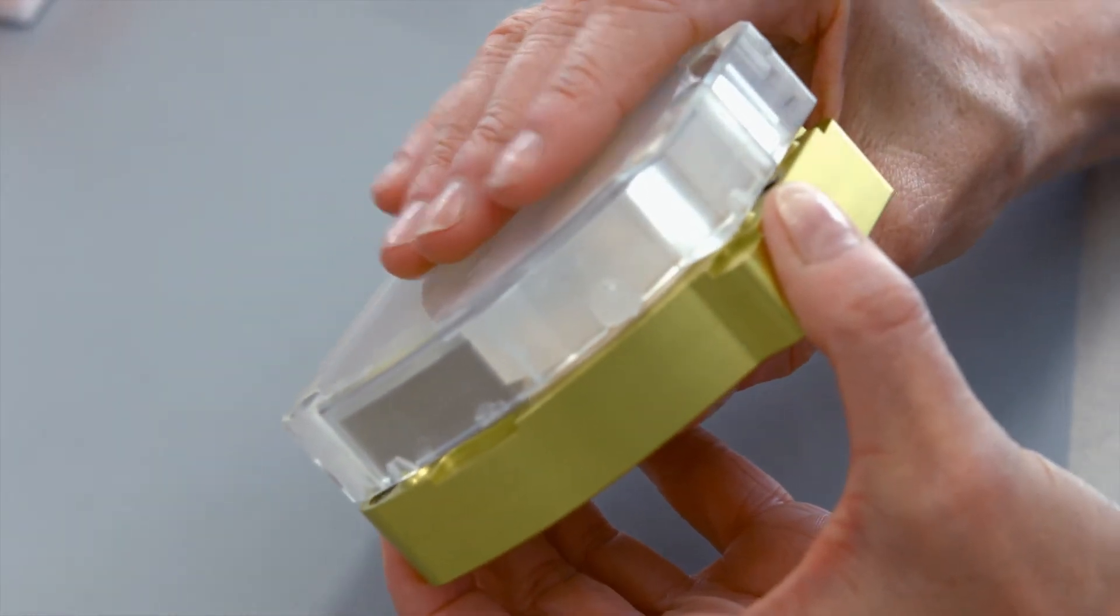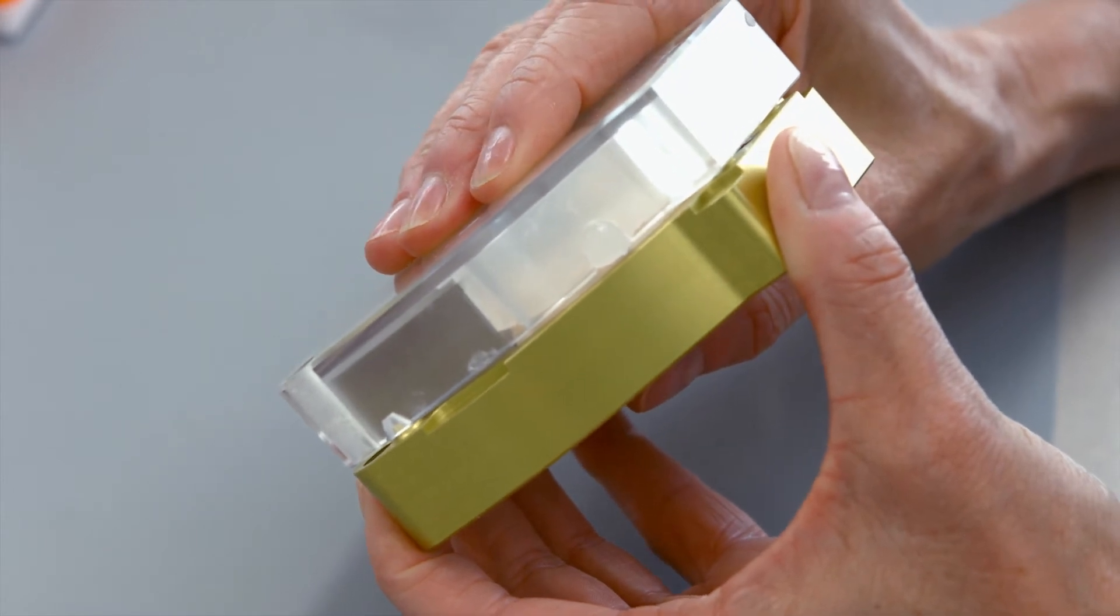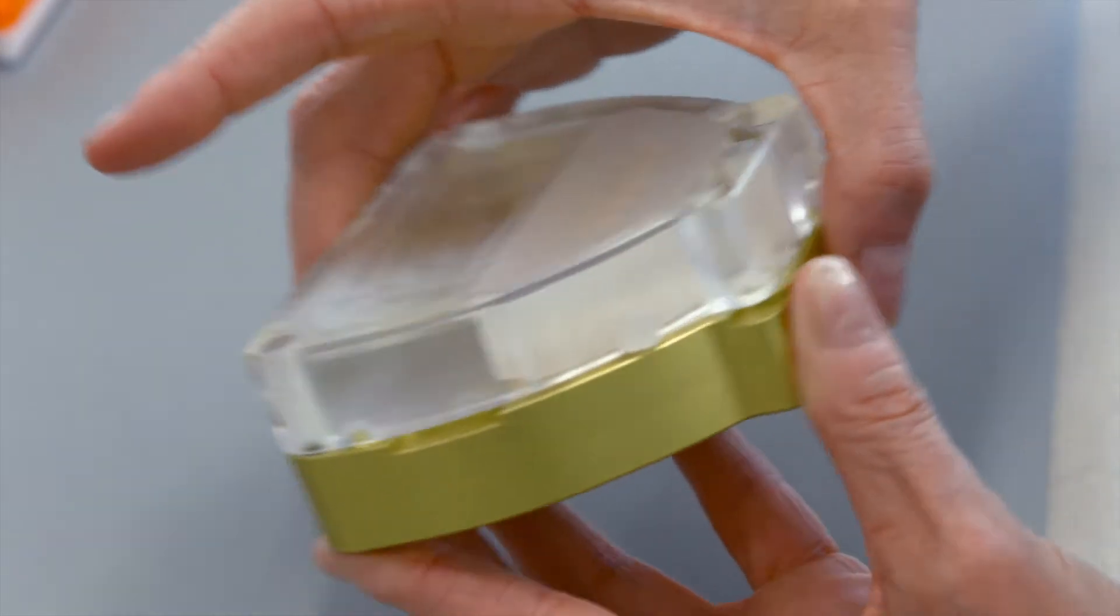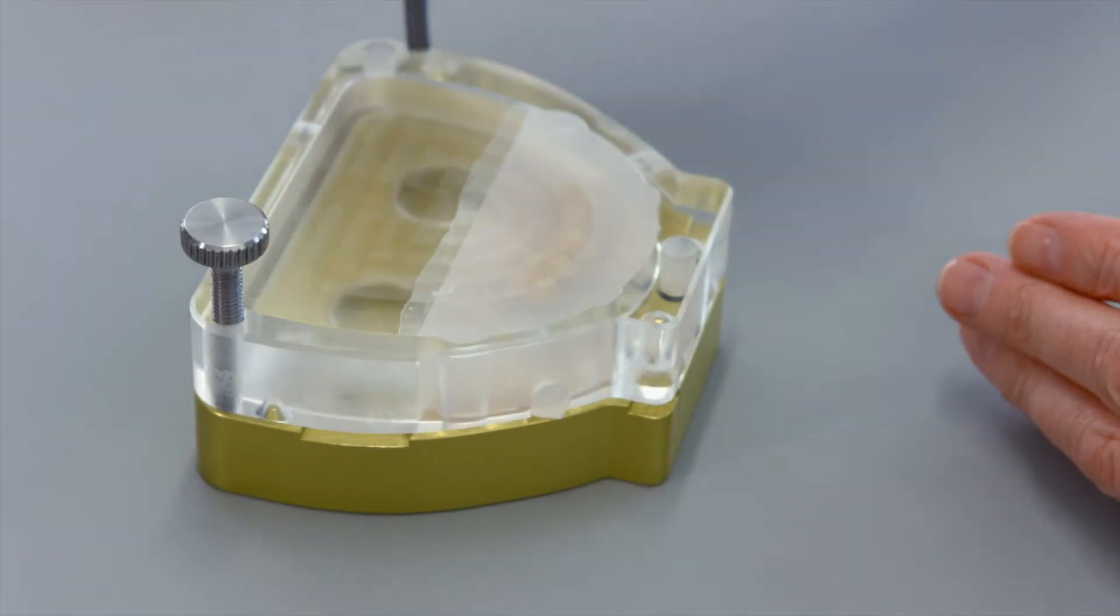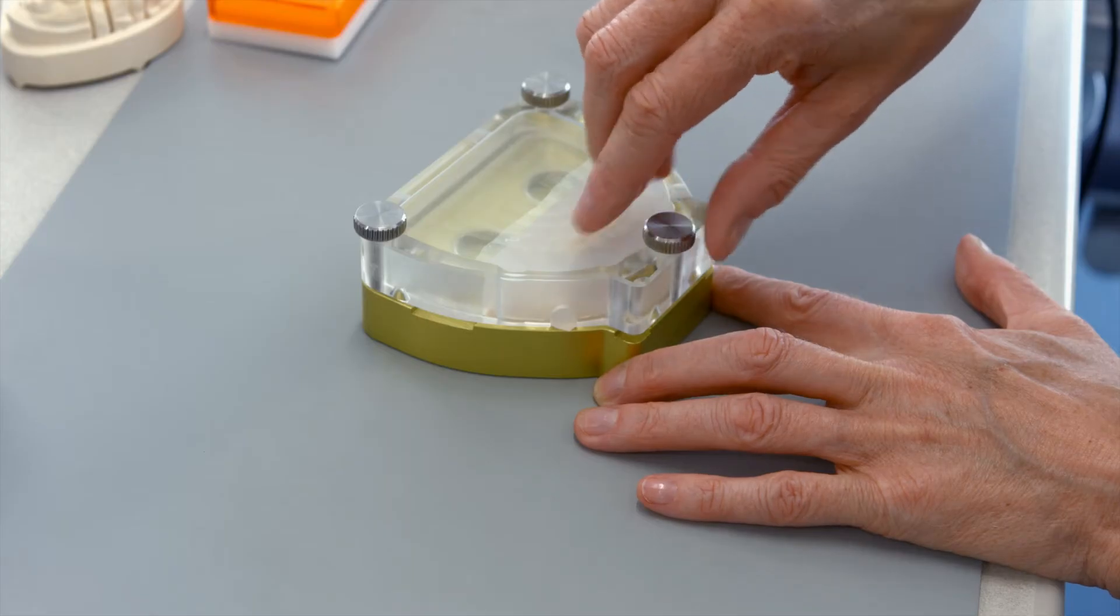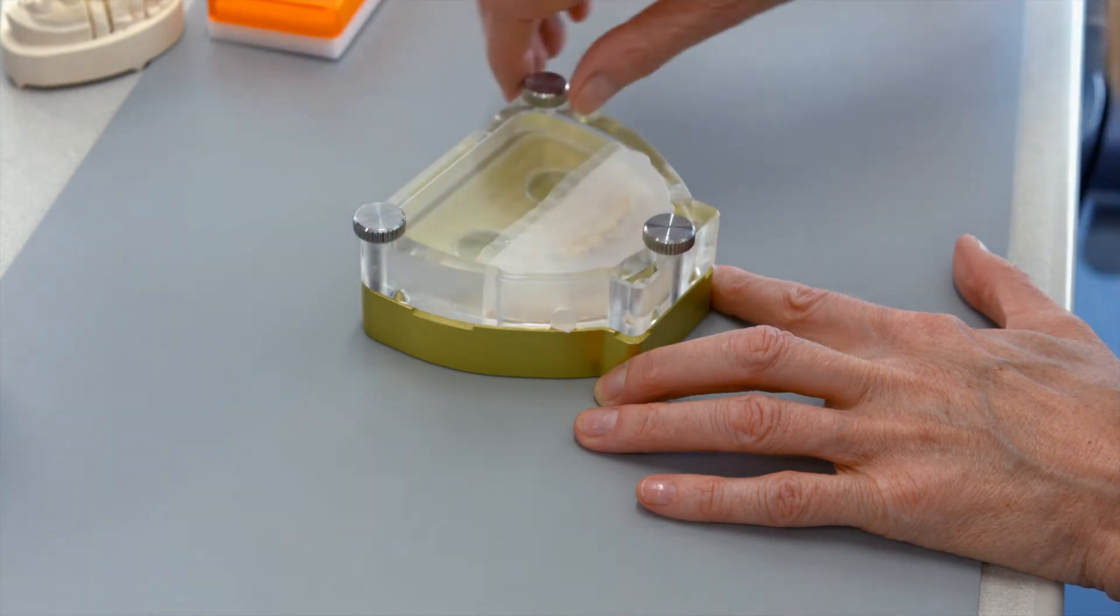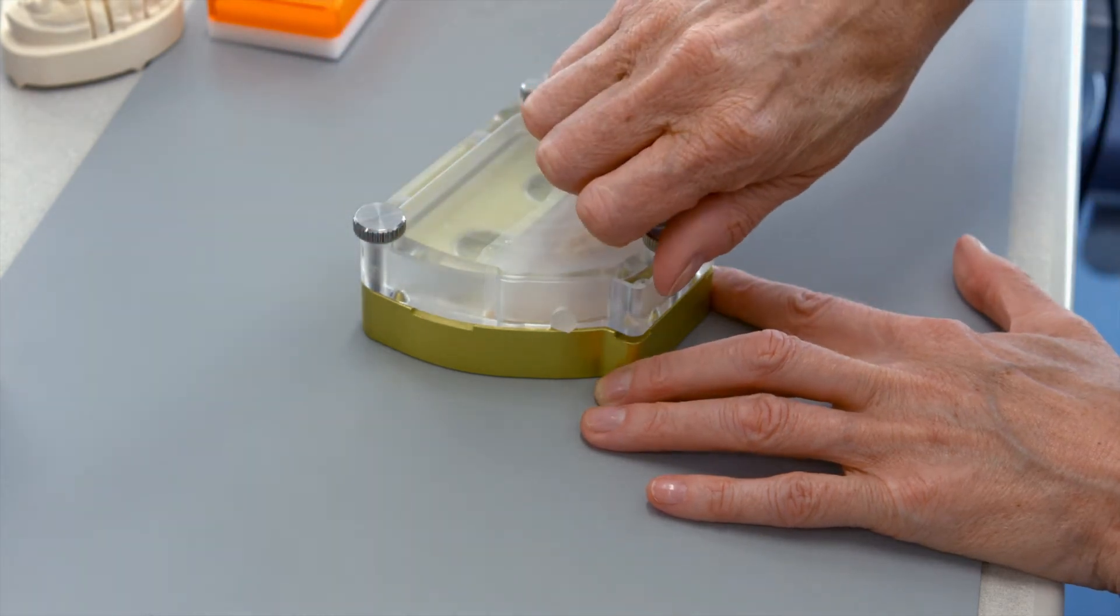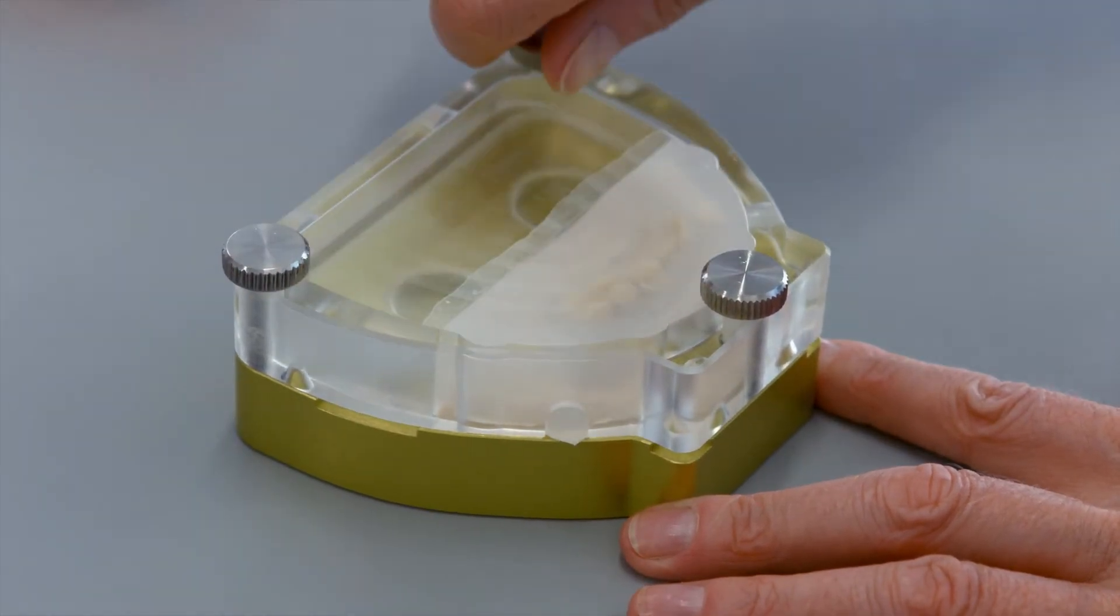Join the two flask halves and adjust them until you feel a perceptible resistance. Close the flask with the three screws provided. Insert the screws into the designated holes. Give each screw one to two clockwise turns, alternating between screws until a gap of one to two millimeters remains between the flask halves. Then tighten all three screws completely.